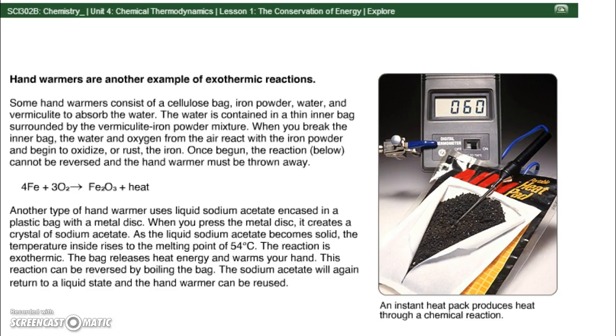Another type of hand warmer uses liquid sodium acetate encased in a plastic bag with a metal disc. When you press the metal disc, it creates a crystal of sodium acetate. As the liquid sodium acetate becomes solid, the temperature inside rises to the melting point of 54 degrees Celsius. The reaction is exothermic. So 54 degrees Celsius, your body is 37 degrees Celsius. So it's obviously warmer. So it feels nice and warm. The bag releases energy and warms your hand. This reaction can be reversed by boiling the bag. That's how you can reuse it. The sodium acetate will again return to a liquid state and the hand warmer can be reused.